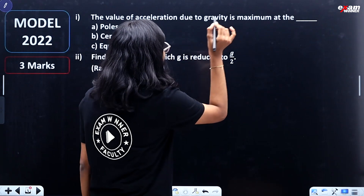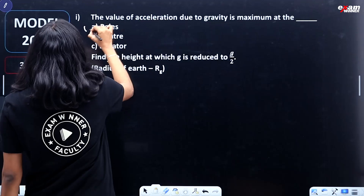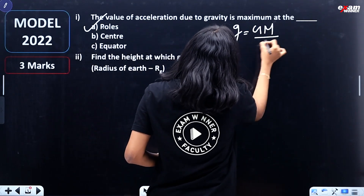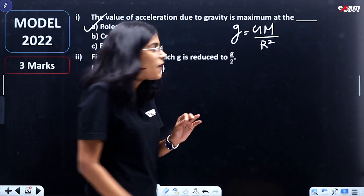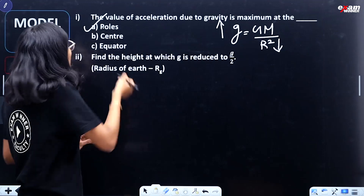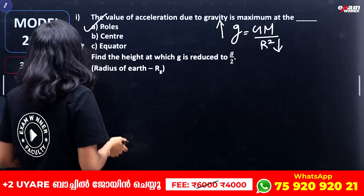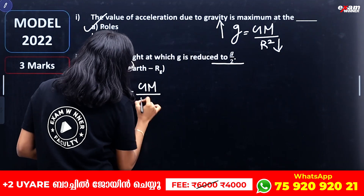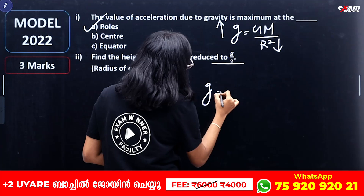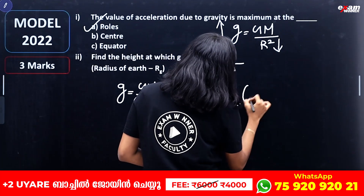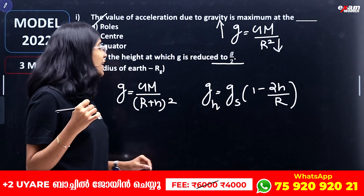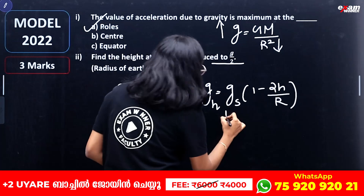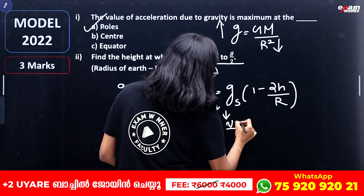The value of acceleration due to gravity is g = GM/R². Next question: find the height at which g is reduced to g/2. We have two equations. The first is g_h = GM/(R+h)², and the second approximation is g_h = g_s × (1 − 2h/R), which applies when height h is less than or equal to 100 km.